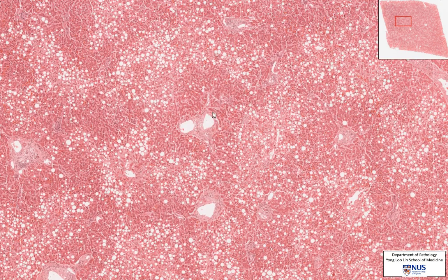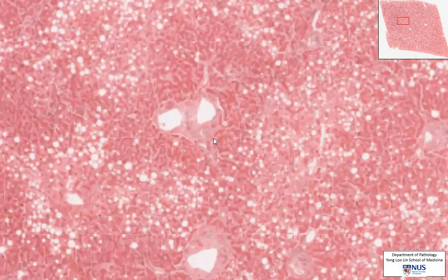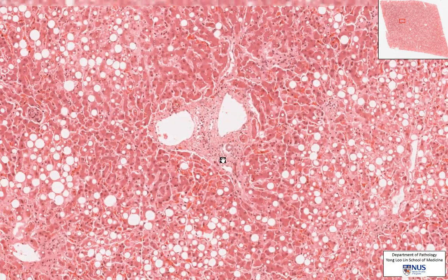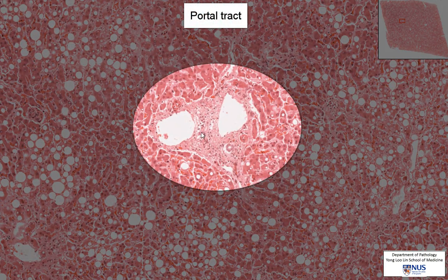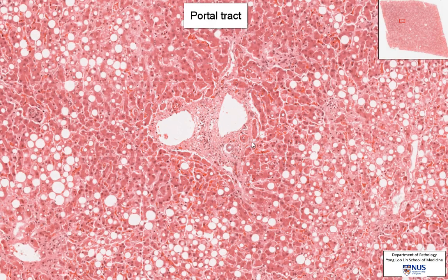If you look at this, there is actually a portal tract in the center of this darker pink region. How do I know it's a portal tract? It has the portal vein, it has a bile duct, and it has a hepatic artery branch. There's also some mesenchymal tissue, connective tissue around this, and this together makes up the portal tract.